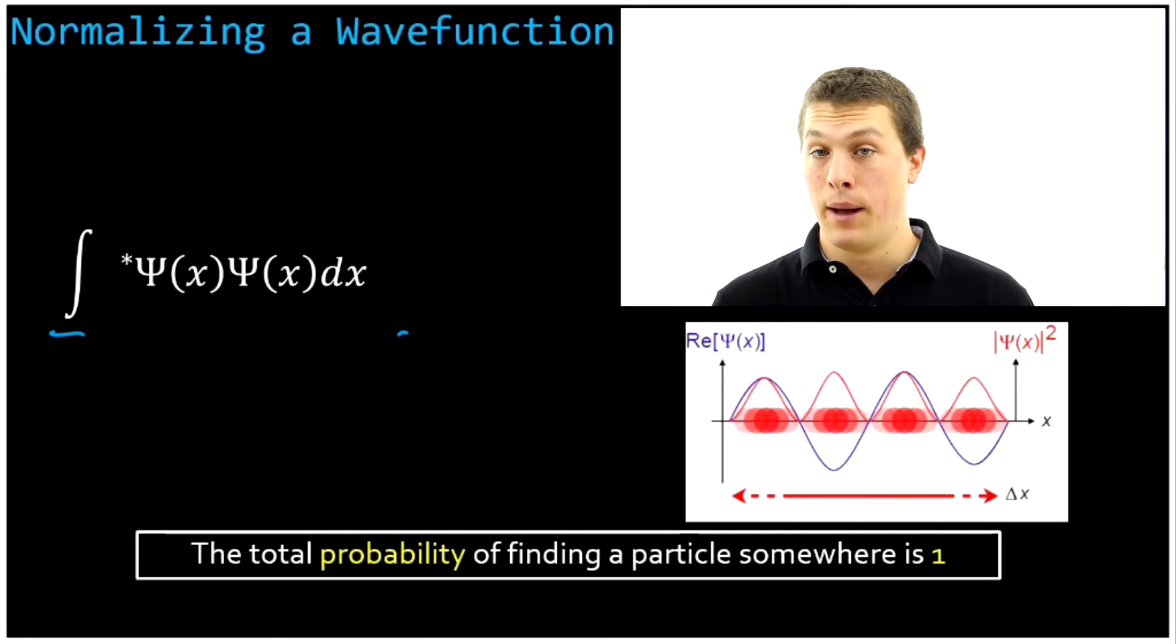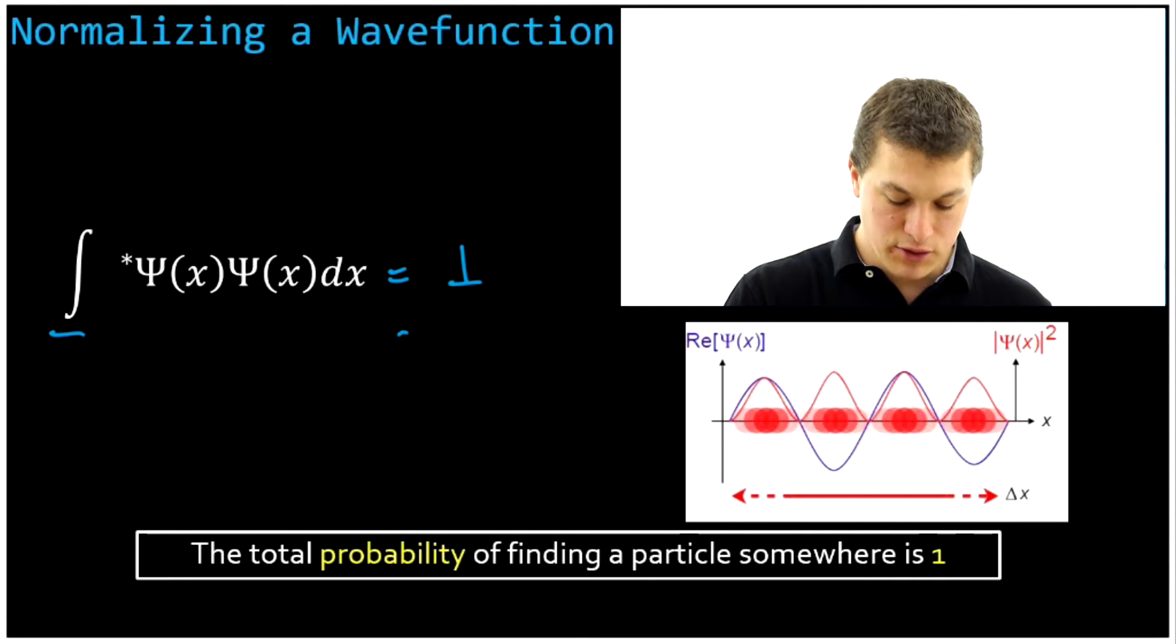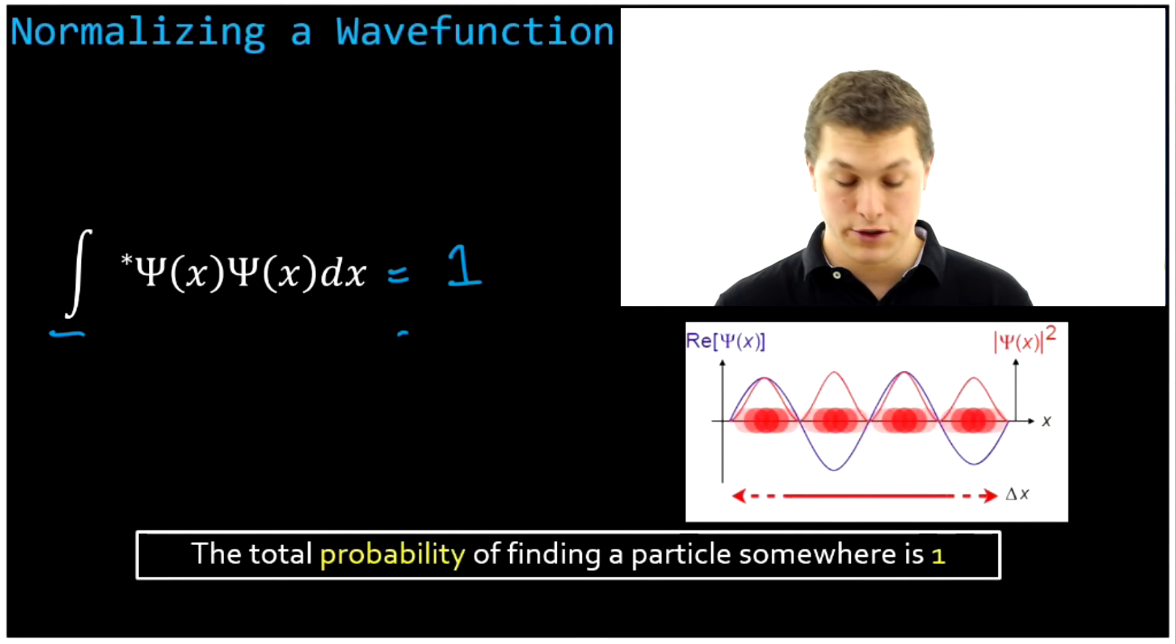Remember that an integral is adding up bits and pieces of something. So when we add up all the chances of finding it somewhere, we must get 1. And that's the critical condition that we're going to use to normalize our wave functions.